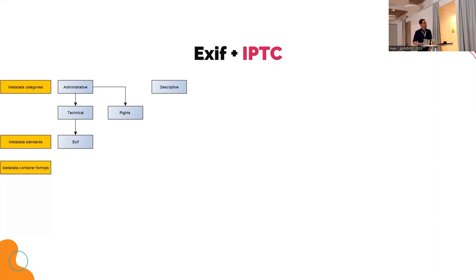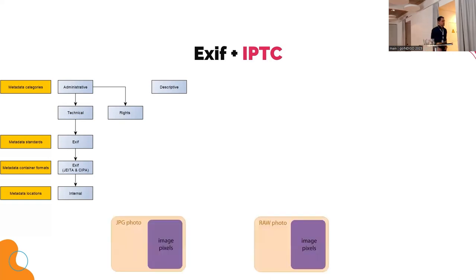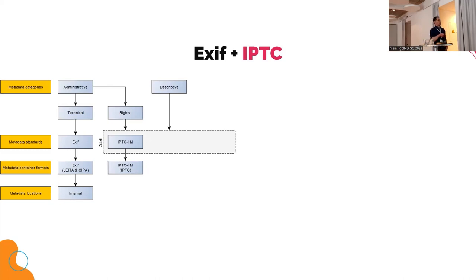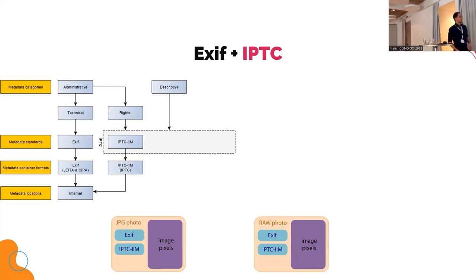EXIF stands for Exchangeable Image Format, and this is stored in an EXIF container that resides inside your file — always inside your file. If you visualize this, you always have an EXIF header just above your image pixels. For rights and descriptive metadata, the most important standard was announced in 1991: the IPTC Information Interchange Model. IPTC stands for International Press and Telecommunication Council, so it's a metadata standard proposed by press photographers. This metadata is stored inside the IPTC IIM metadata container, also internally in the file, holding copyright information, keywords, and so forth.